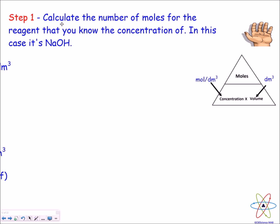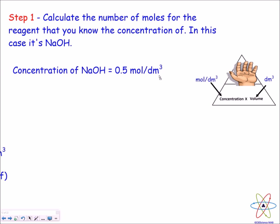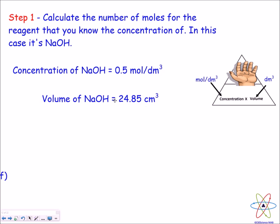First, calculate the number of moles for the reagent we know the concentration of — in this case NaOH. Because we're working out moles, we do concentration multiplied by volume. The concentration is 0.5 mol/dm³ and the volume is 24.85 cm³, which must be converted to decimetres cubed. So we do 0.5 multiplied by 0.02485, giving us 0.0124 moles of sodium hydroxide.